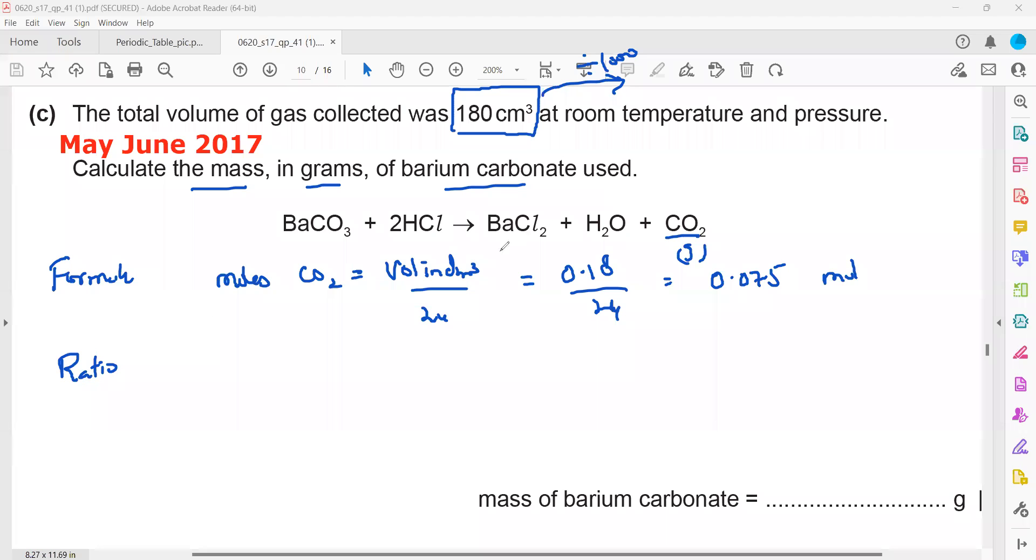We also have the same moles for barium carbonate because the ratio is 1:1. We'll use the ratio to find the moles of barium carbonate. The ratio between barium carbonate and carbon dioxide is 1 to 1. If we have 0.075 moles of carbon dioxide, then we'll have the same, 0.075 moles of barium carbonate.